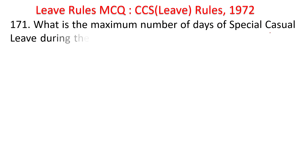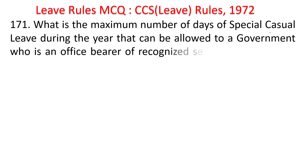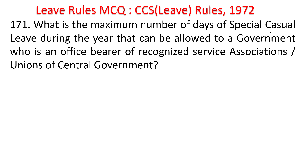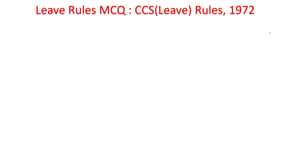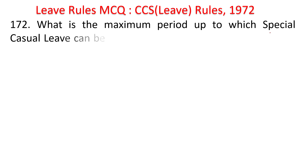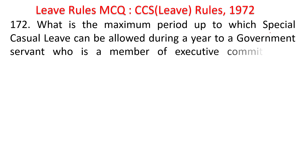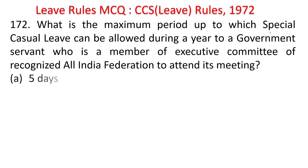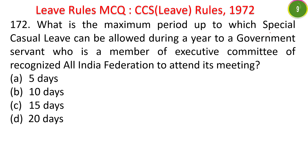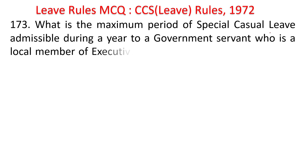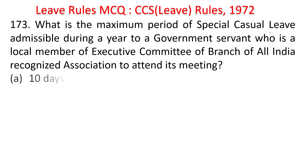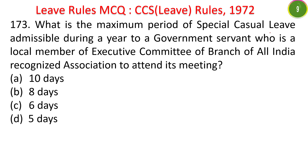What is the maximum number of days of special casual leave during a year for a government servant who is an office bearer of a recognized service association or union of central government? Options: 10, 15, 20, or 30 days. The answer is 20 days. For an executive committee member of a recognized all-India federation: 10 days. For a local member of an executive committee of a branch of an all-India recognized association: 5 days.